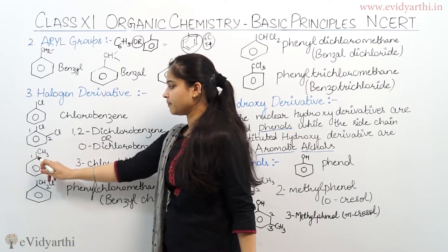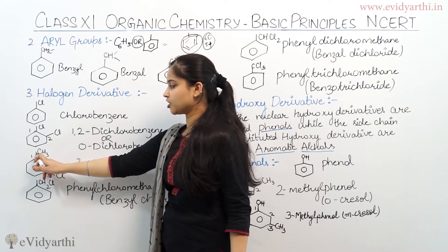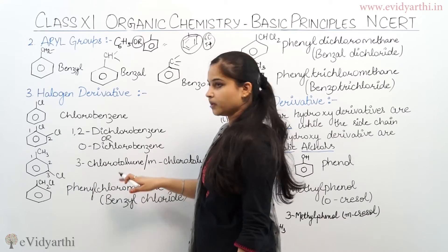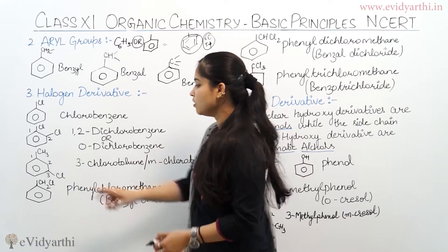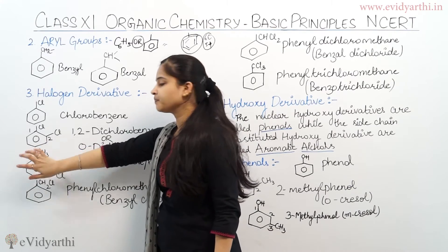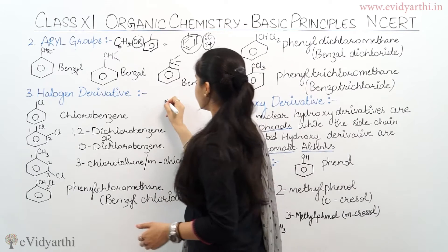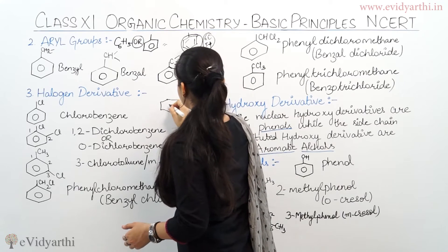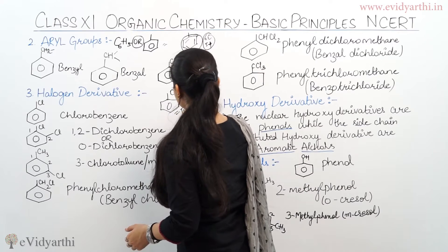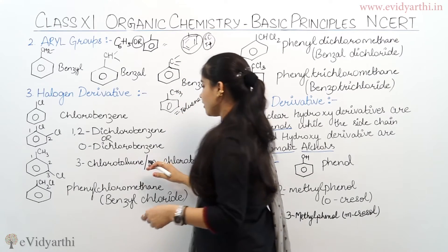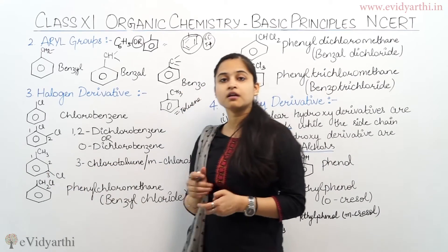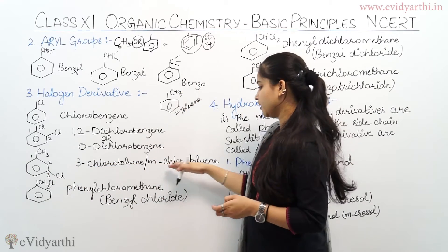Now in this first example, in this respect, it is 3-chlorotoluene. Why do we call this toluene? Because the parent compound is C6H5-CH3, which is toluene. So this compound is 3-chlorotoluene, or meta-chlorotoluene. Because the chlorine is at the meta position.